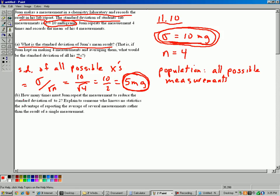Okay, part B. How many times must Juan repeat this experiment to reduce the standard deviation to 2? Explain to someone who knows no statistics the advantage of reporting the average of several measurements. Well, first of all, let's figure this out. How many times, in other words, n equals what?